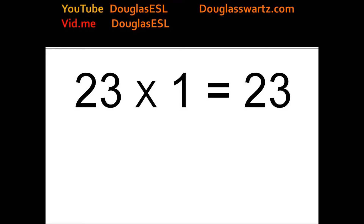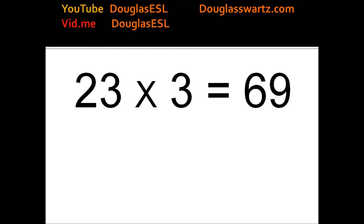23 times 1 equals 23. 23 times 2 equals 46. 23 times 3 equals 69. 23 times 4 equals 92.